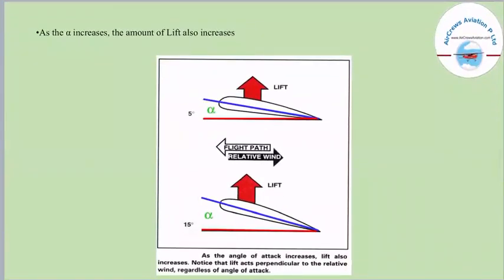If there is an increase in angle of attack (alpha), lift will also increase. As shown in the pictures, at an angle of attack of five degrees, a certain amount of lift is generated. As the angle of attack increases to 15 degrees, there is a greater amount of lift generation. As angle of attack increases, the amount of lift also increases simultaneously. Lift acts perpendicular to the relative wind regardless of the angle of attack.